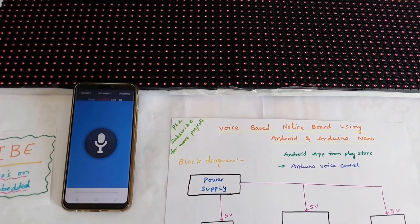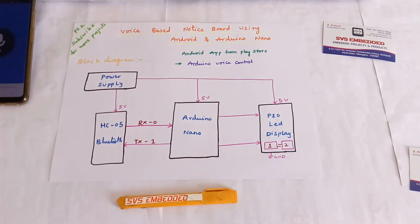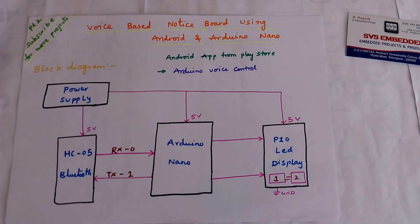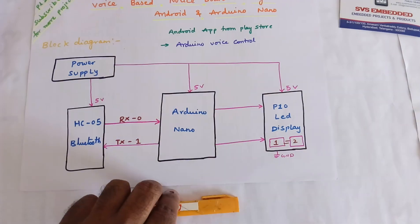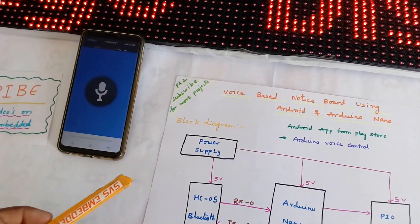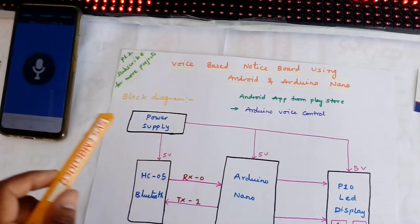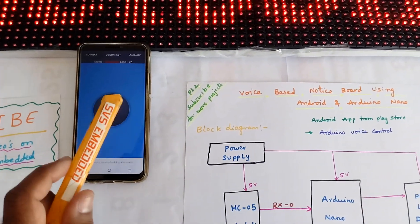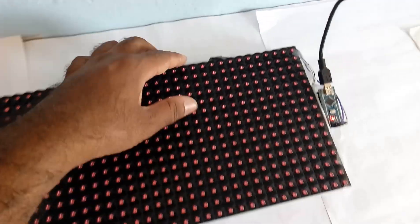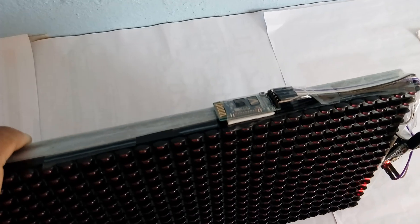Hi, we are from SVS Embedded. The project title is voice-based notice board using Android and Arduino Nano. In this project we are using one app — a voice controlled app from the Google Play Store. We are sending the voice through this Bluetooth app and it should be received via Bluetooth module.